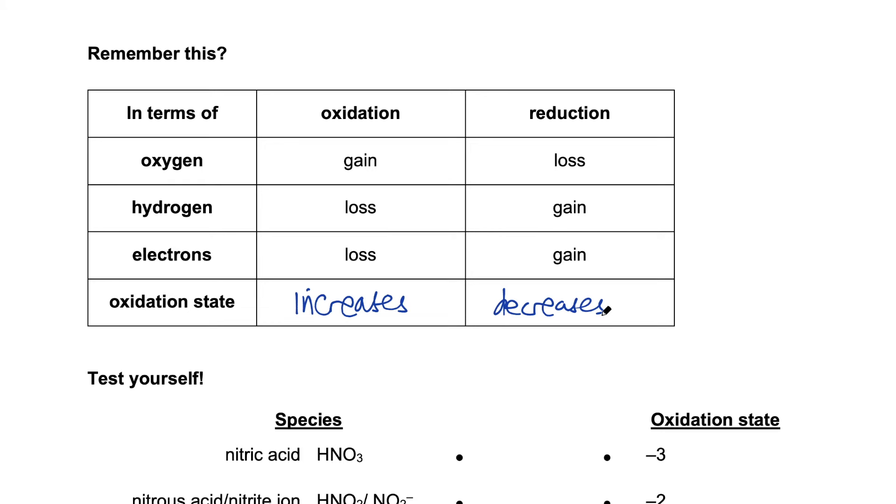Among all the definitions, my preferred one is always the oxidation state because it's the most versatile and it works in all situations. The first two are very easy to see, but they cannot always be used because not every equation contains oxygen or hydrogen. The one on electrons is also quite difficult to see, especially when the chemical equation is very complicated. So I will encourage all of you to be able to master the skill of being able to calculate oxidation state, as this is the most foolproof method in this topic.